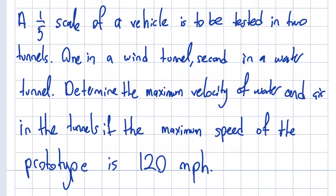Let's solve an example. A one-fifth scale of a vehicle is to be tested in two tunnels: one wind tunnel and one water tunnel. I'll explain at the end why we may need a water tunnel. Determine the maximum velocity of water and air in the tunnels.